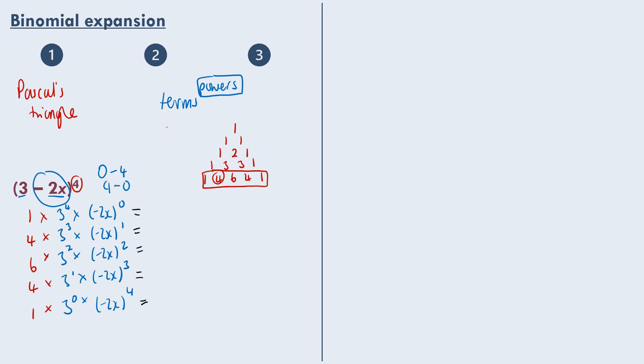If they ask you for just the coefficient of x squared, then you don't actually need to work out all of these. All you need to focus on is this term here. So we have x being squared. And here that would be 6 times 9 times minus 2x squared is 4x squared, so the minus cancels out. We end up with 54 times 4 which is 216. So the coefficient of x squared here is 216.